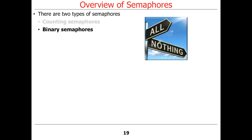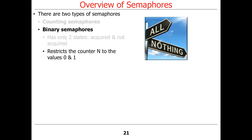The second type of semaphores are binary semaphores. As the name implies, they're binary — they have only two states: acquired or not acquired, i.e., available. You can think of them as having a counter that's a Boolean with the value of zero or one. It's either all or nothing.